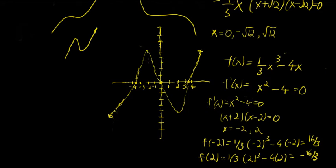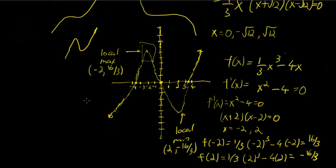And so this is the graph. Now we had just looked at the graph and figured out that this was a local maximum here. Local maximum at the point (-2, 16/3). And a local minimum at positive (2, -16/3).